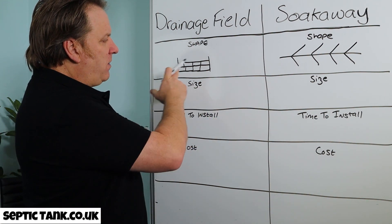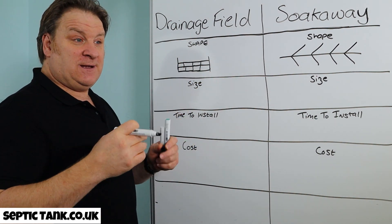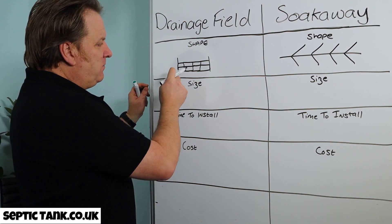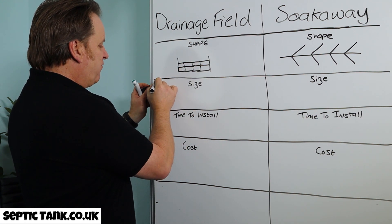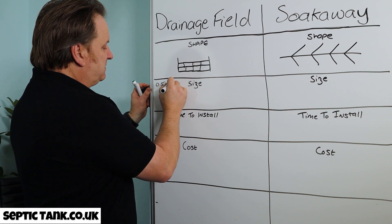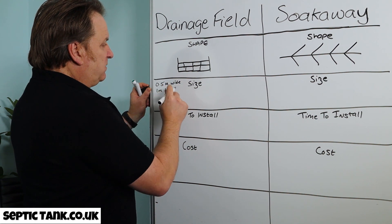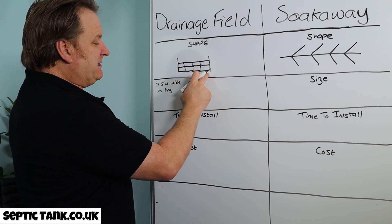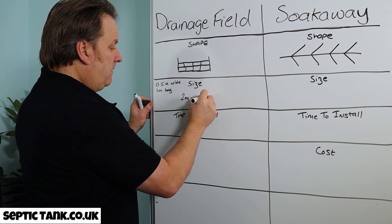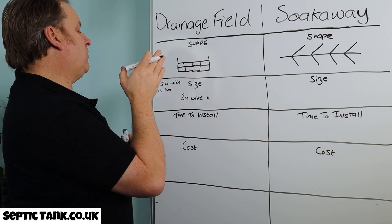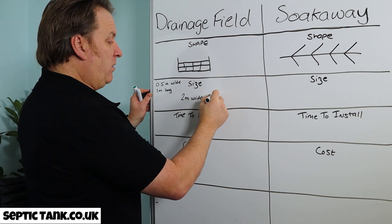What about the size? These are quite small holes, because with drainage field crates the liquid is contained within the crate. Width-wise, the crates are 0.5 meters wide and one meter long. So in this instance, if they're four wide, that's two meters wide, and with two on top of each other, one meter long overall.